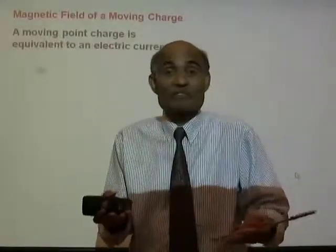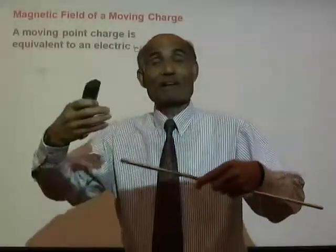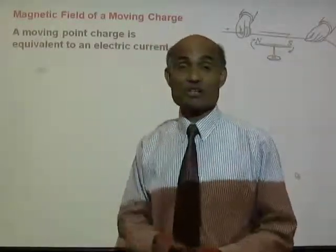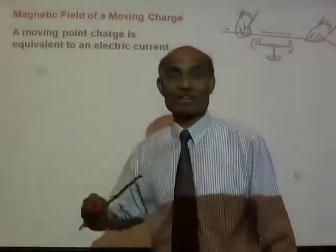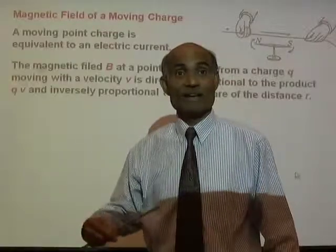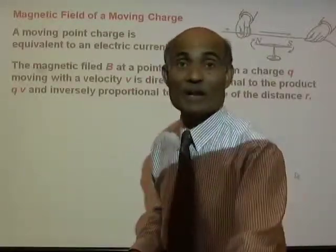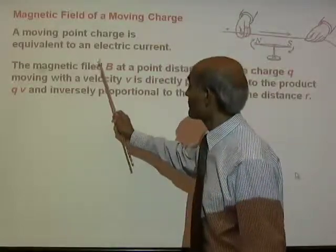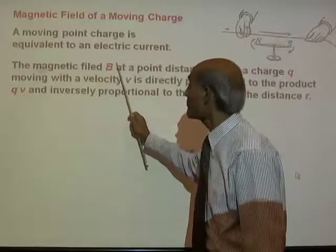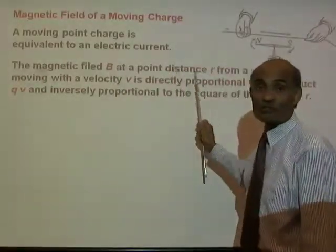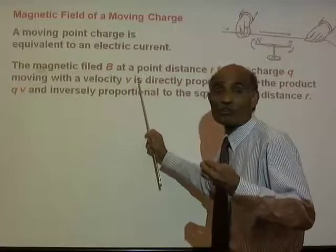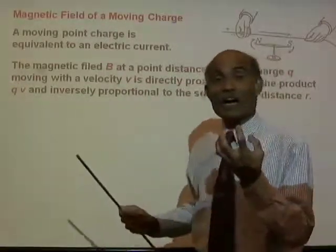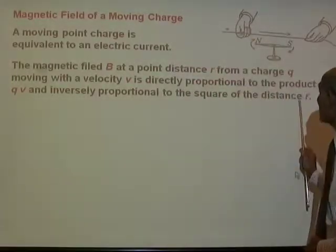A moving point charge is equivalent to an electric current. So if an electric current produces a magnetic field, a moving charge should also produce a magnetic field. We will obtain an expression for the magnetic field B at a point distance r from a moving charge, where v is the velocity of that charge.